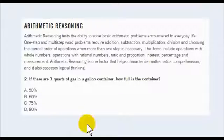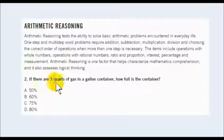Alright, so back to our question. If there are three quarts of gas in a gallon container, and when we say a gallon, we have to assume that this is a one gallon container. A gallon means one. How full is the container? Answer C, 75%, is our answer.